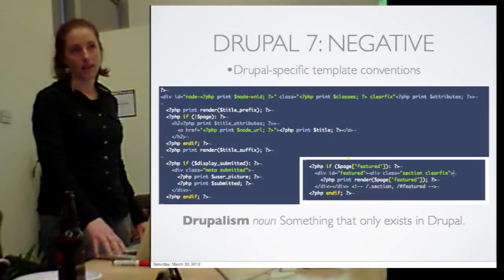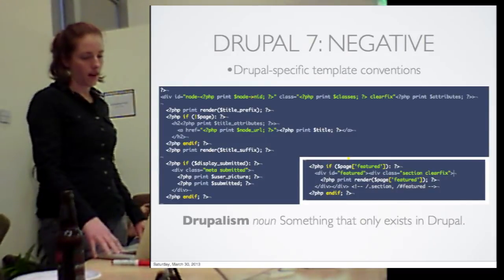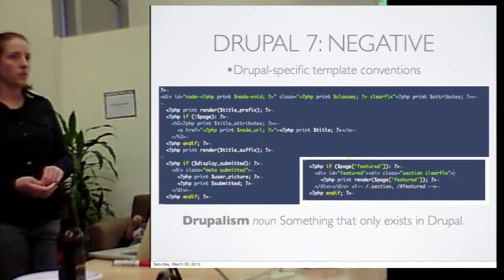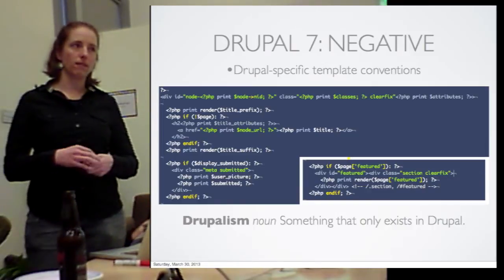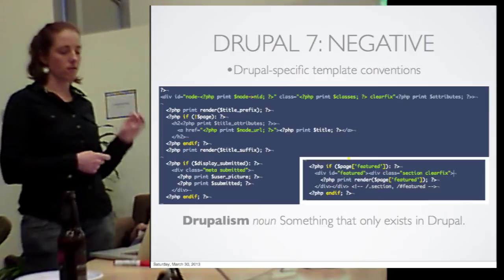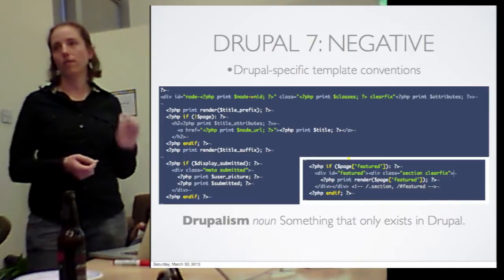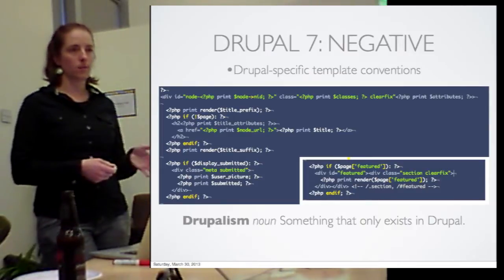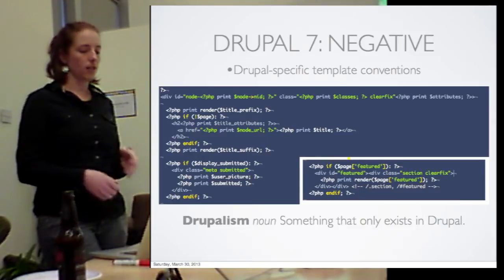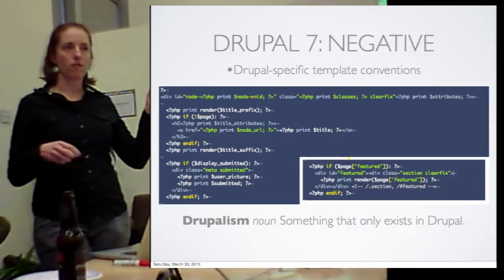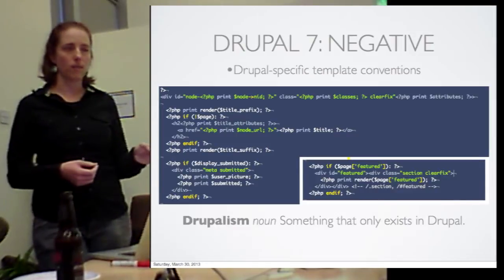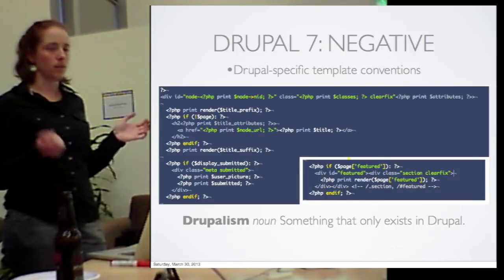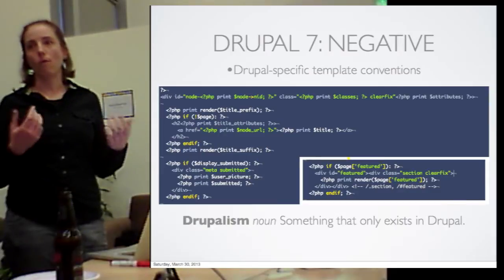We're going to go over some of the negatives of Drupal 7, starting with language that is specific only to Drupal. Drupal does use the PHP template engine, but in Drupal 7 we changed the way PHP template works so it now only works in a way that doesn't exist anywhere else in the world. We put function calls inside our template files, whereas before templates were just supposed to print variables to the page.